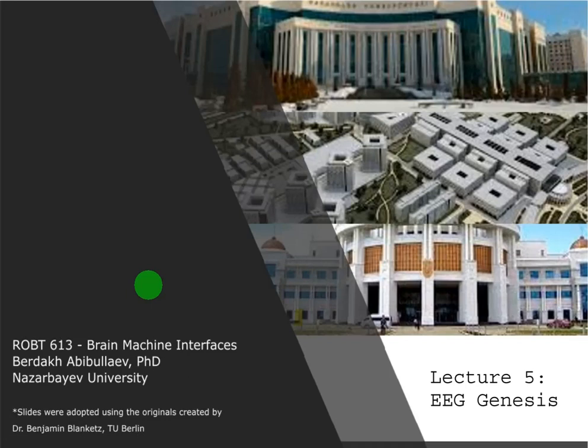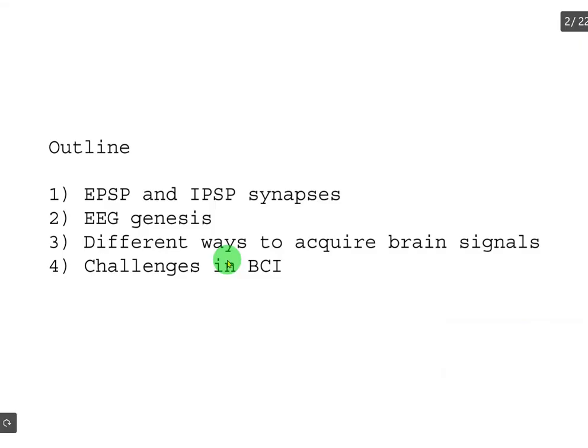Hello students, welcome to lecture 5. In this lecture, we will take a closer look at the origin of electroencephalographic signals and the simple generation mechanism. The outline of today's lecture is as follows: first, we will review excitatory post-synaptic potentials and inhibitory post-synaptic potentials generated in the post-synapse, different ways to acquire brain signals, and we will briefly revisit challenges in BCI.